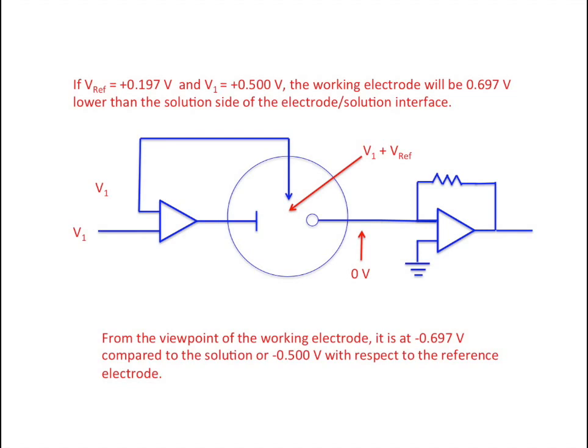It's this voltage that we actually plot as the applied voltage in our experiment. So the voltage that appears on the horizontal axis is the voltage at the working electrode with respect to the reference electrode.